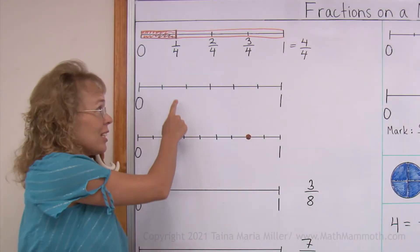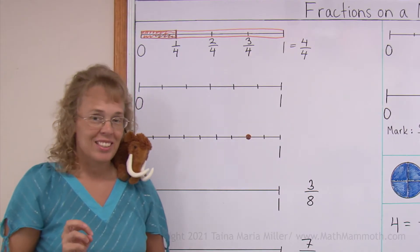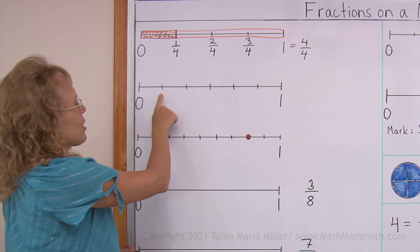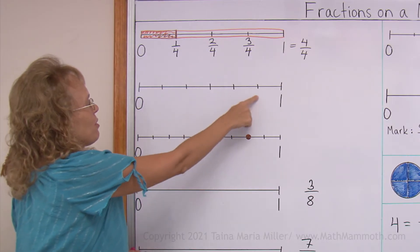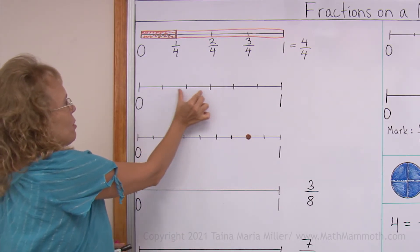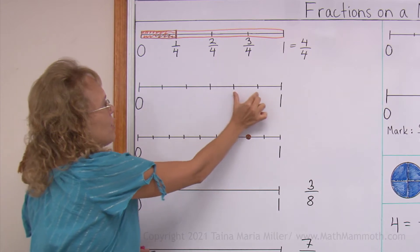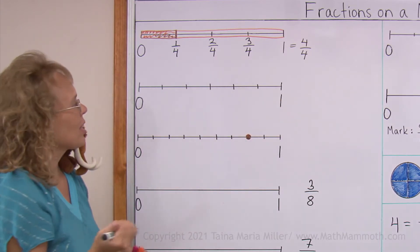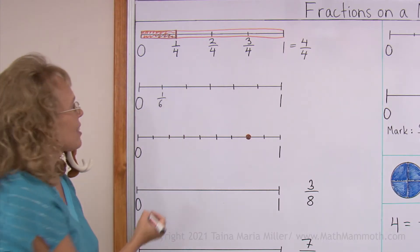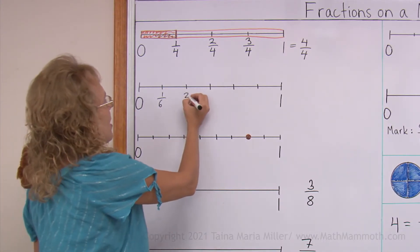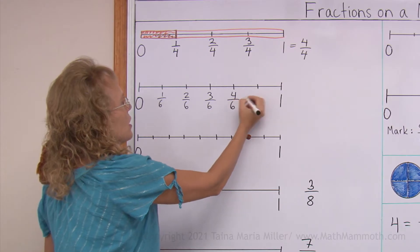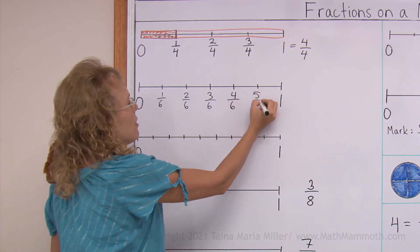Now this number line — how many parts is it divided into? Well, I can't count the tick marks and say five. I need to count this way: one, two, three, four, five, six — six parts. So when we come to this tick mark, it is one sixth. And then two sixths, three sixths, four sixths, five sixths.